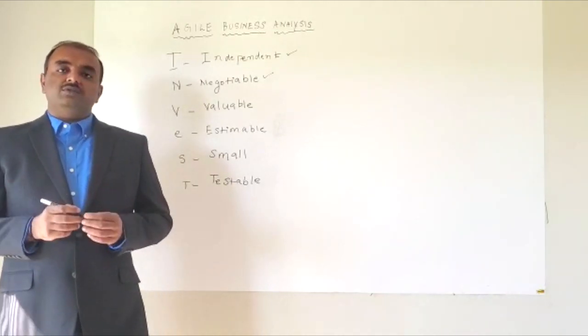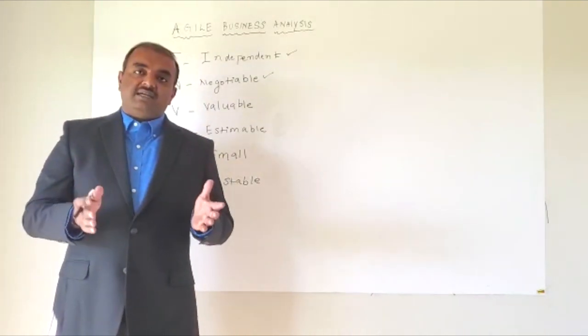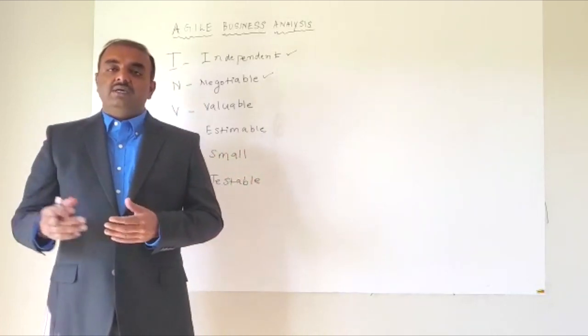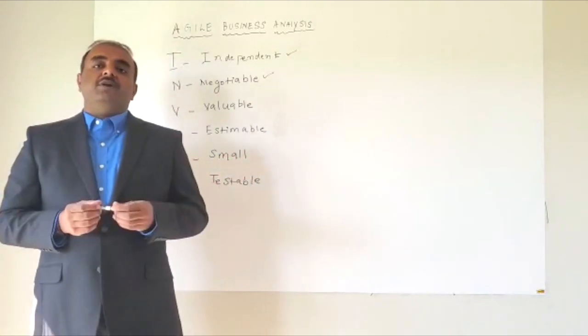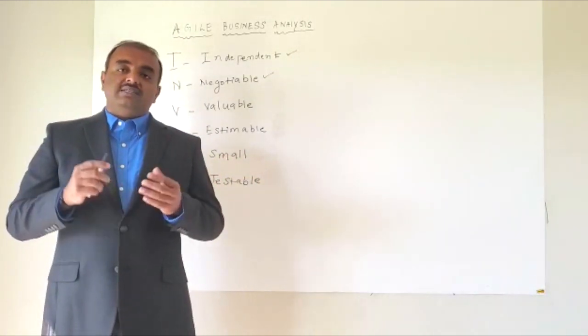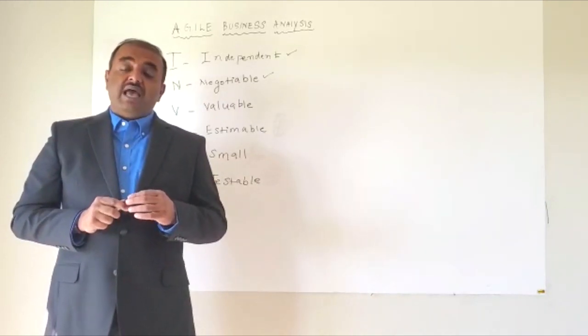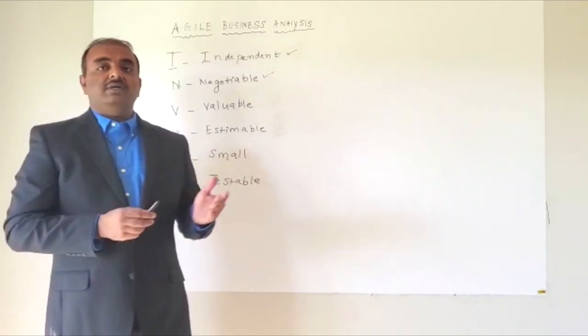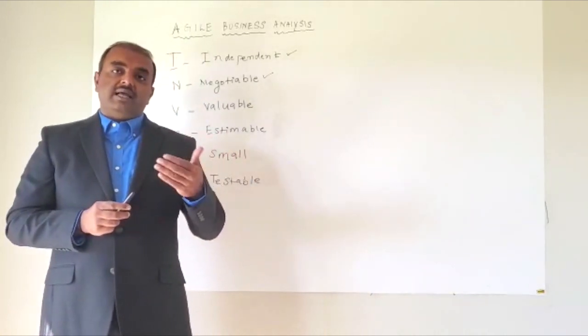So one good example is most of the time the development team comes up with their own story where we have to establish a connection between different databases or we have to increase our server speed. So when this kind of stories are put up in the product backlog, the product owner may not be able to understand the priority. So as much as possible, when there are any developer stories, we have to rewrite in such a way that gives some kind of value to the product owner or the business so that the prioritization can happen easily.